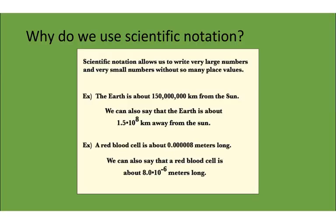For instance, the Earth is about 150 million kilometers from the sun. Instead of writing 150 million, you can also say that the Earth is about 1.5 times 10 to the 8th power kilometers away from the sun. So that takes that really big number and kind of condenses it and makes it smaller.